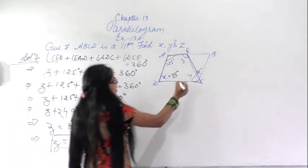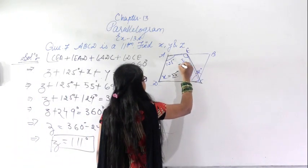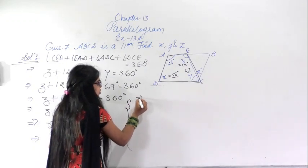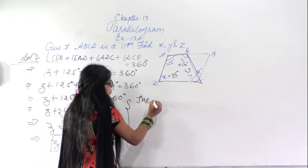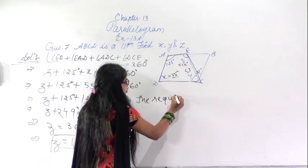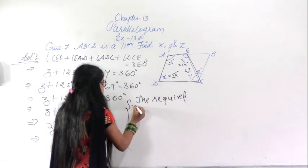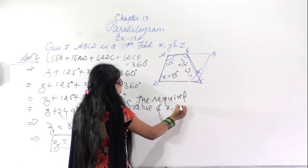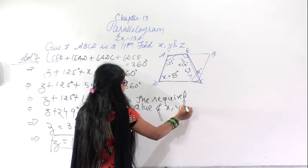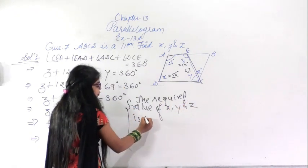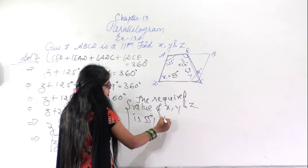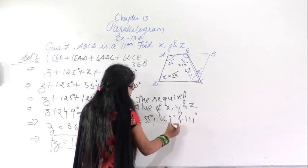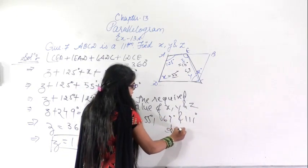So here we got y equals 69 degrees and z equals 101 degrees. Therefore the values of x, y, and z are 55 degrees, 69 degrees, and 101 degrees respectively. This is the answer.